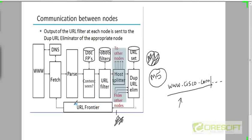If the URL is new to M5, it adds it to its own URL frontier, and when the time comes, that URL will be taken out of the frontier and the corresponding document will be fetched. Each machine sends URLs destined for the other 19 machines out over the network, and simultaneously receives URLs it is supposed to crawl from those other machines. Outgoing URLs go to the duplicate URL elimination modules of the other 19 machines.